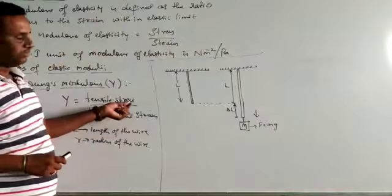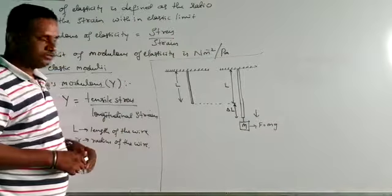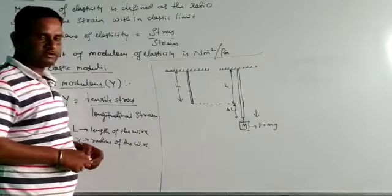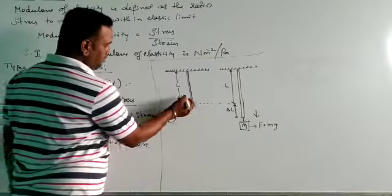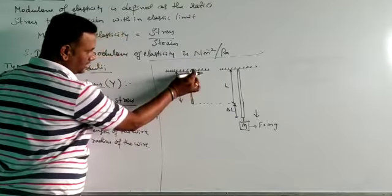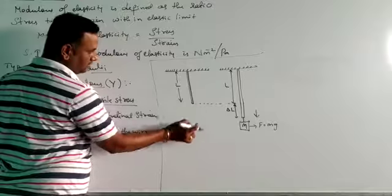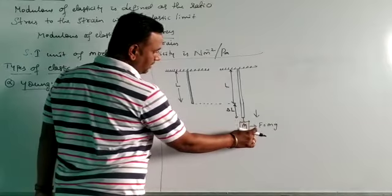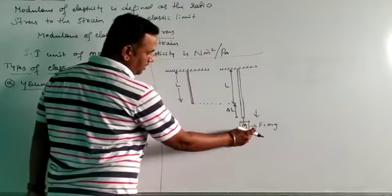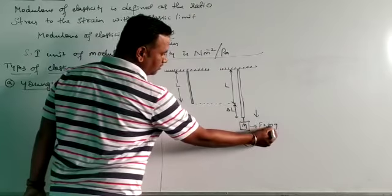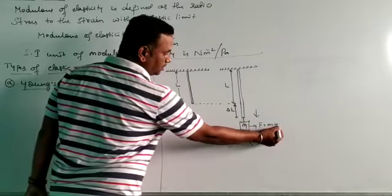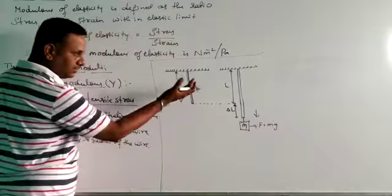We are considering the same topic from the last video where we discussed a segment of mass m suspended from a wire, where force equals mass into gravity. G means gravity which is acting in the downward direction.